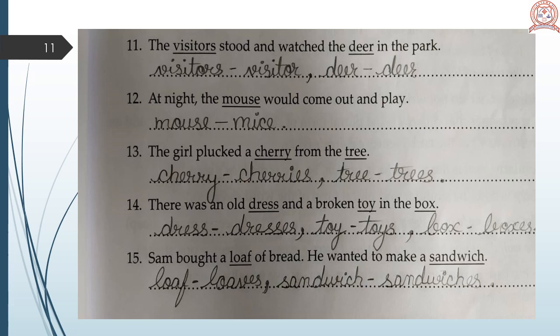The visitors stood and watched the deer in the park. Visitors, visitor. Deer will remain deer. At night, the mouse would come out and play. Mouse, mice. The girl plucked a cherry from the tree. Cherry, cherries. Tree, trees. There was an old dress and a broken toy in the box. Dress, dresses. Toy, toys. Box, boxes. Sam bought a loaf of bread. He wanted to make a sandwich. Loaf, loaves. Sandwich, sandwiches.